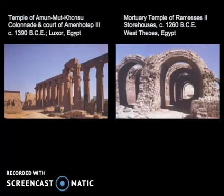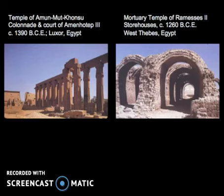In contrast, the temple in West Thebes uses common brick to form arches. The compression of arches allows for spanning or bridging gaps when the material is smaller in scale — compare large blocks of stone with standard bricks. This system is arcuation.